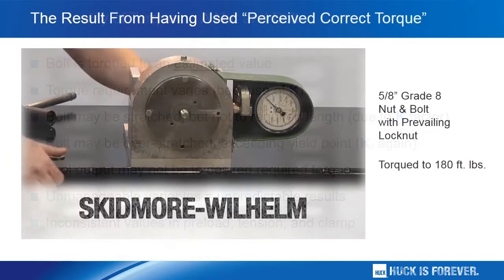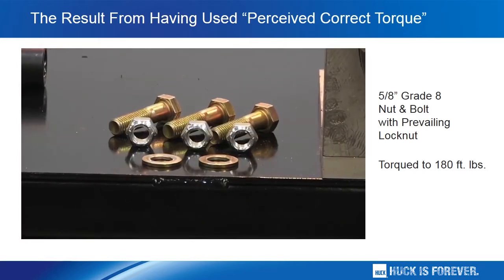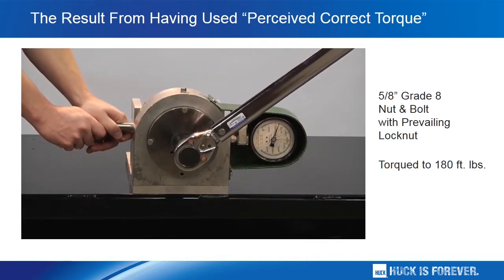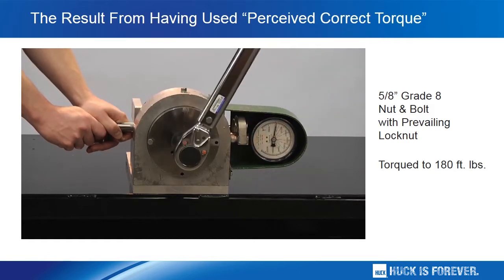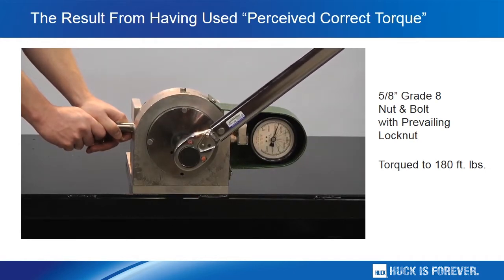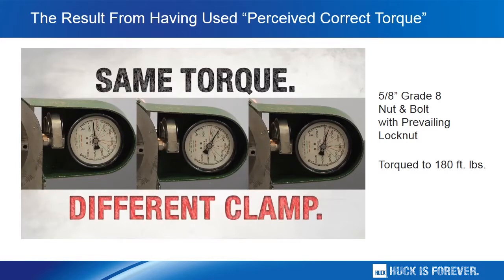Let's look at real performance using a Skidmore-Wilhelm test unit to evaluate three 5/8-inch grade 8 nuts and bolts, each equipped with a lock nut. Each of these nuts and bolts are torqued to 180 foot-pounds. While you may think that the consistent torque of 180 foot-pounds equals consistent clamp, note the variation in true clamp achieved in each of three installations: 15,500, 29,000, and 24,000 foot-pounds respectively. It's clear — consistent torque does not equal consistent clamp.